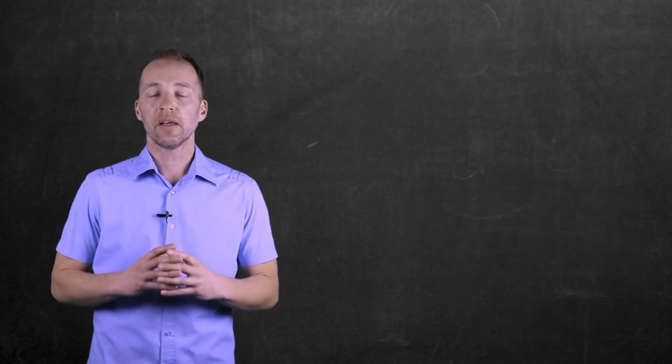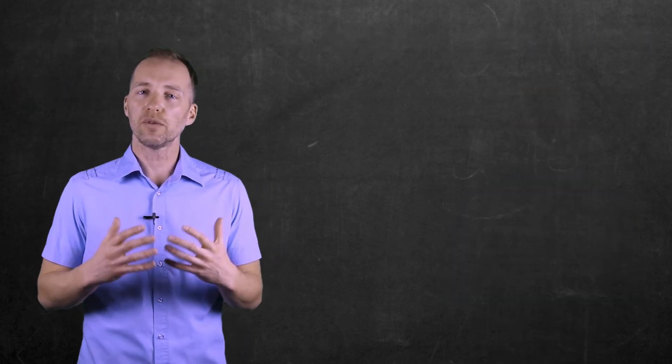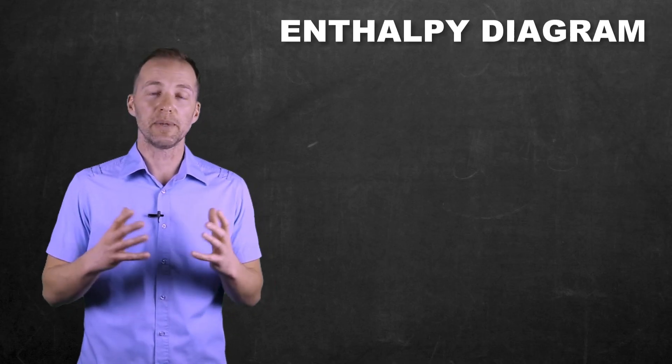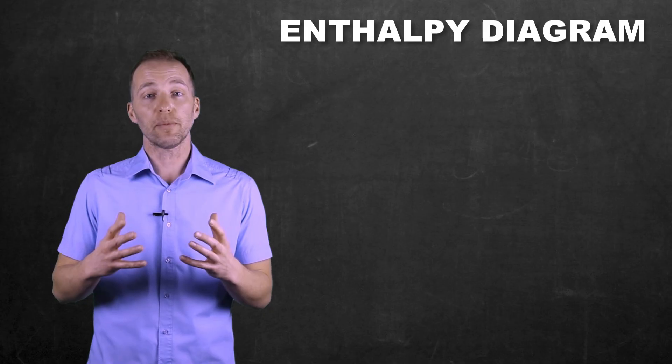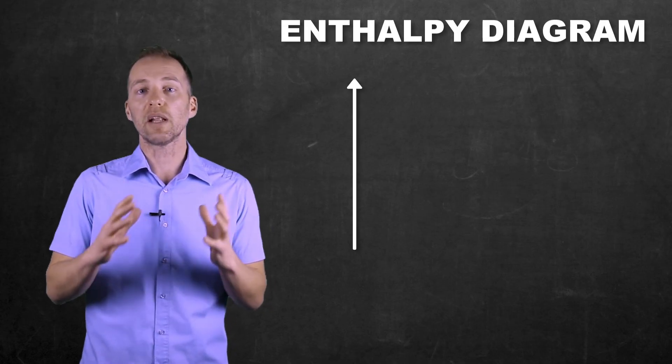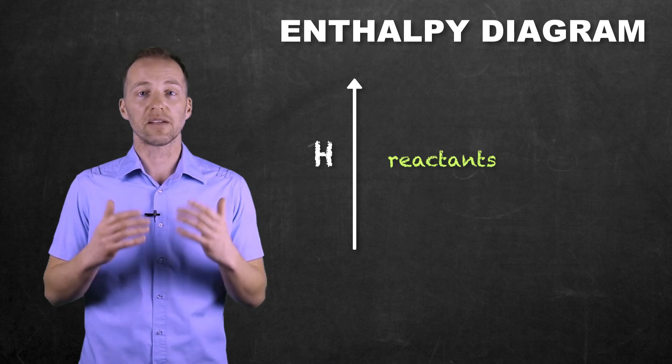Now there is another way that we can represent what goes on in a thermochemical process, and that's using something called an enthalpy diagram. And in this enthalpy diagram, as I indicated, there's no zero value, it's just a relative measure of enthalpy of reactants and products.